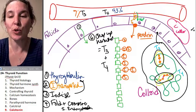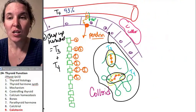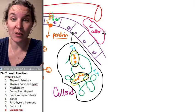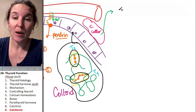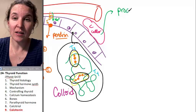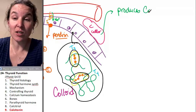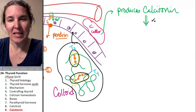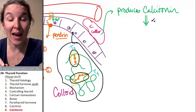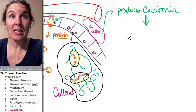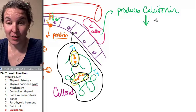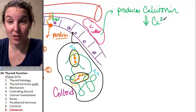C cells produce calcitonin. So let's take a second to go, dude what does calcitonin do? It produces calcitonin. Calcitonin is the only one that's going to act to decrease calcium concentration in the blood.